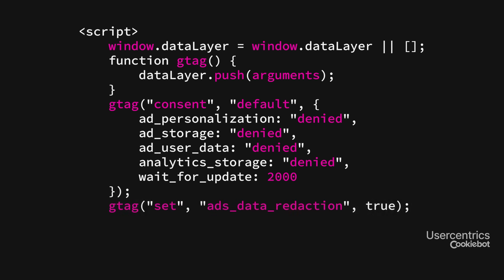Line 12 contains the Ad Data Redaction parameter. Set this to True to remove AdClick identifiers from network requests for users that have not given consent. Line 13 contains the URL Passthrough parameter. Set this to True to enable the pass-through of AdClick parameters through a session.